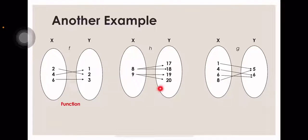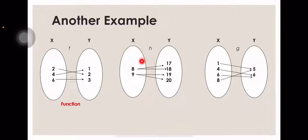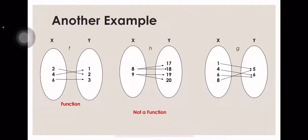The next diagram has X values of 2, 8, and 9. The value 7 has two values in Y — 17 and 18. Also, the value 9 has two values — 19 and 20. This means it is 1-to-many, so this is not a function.